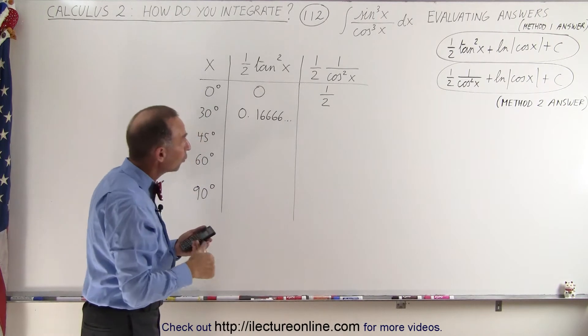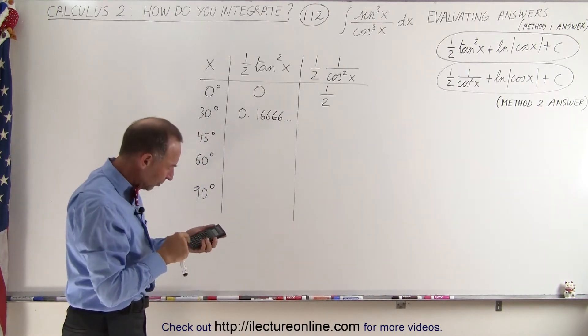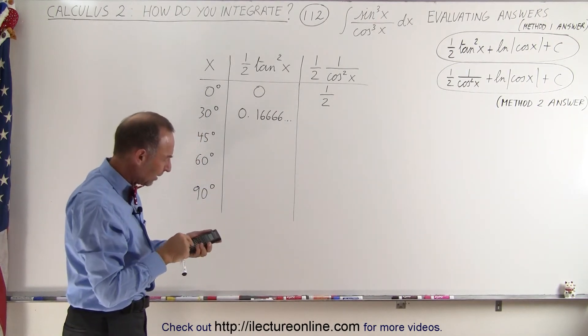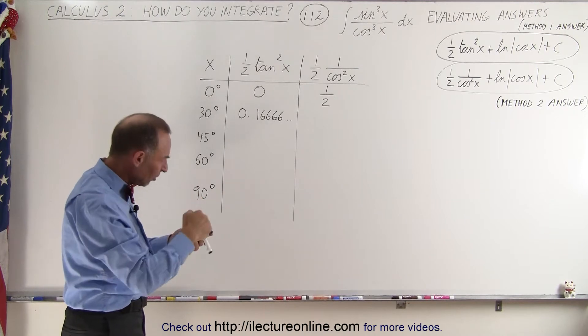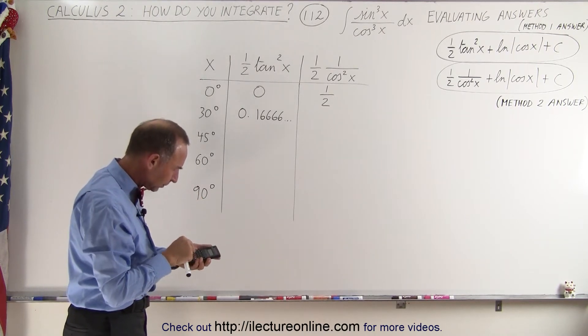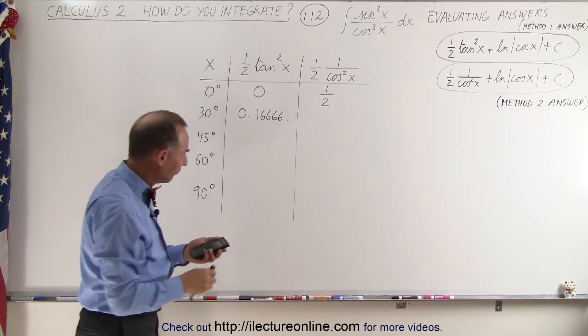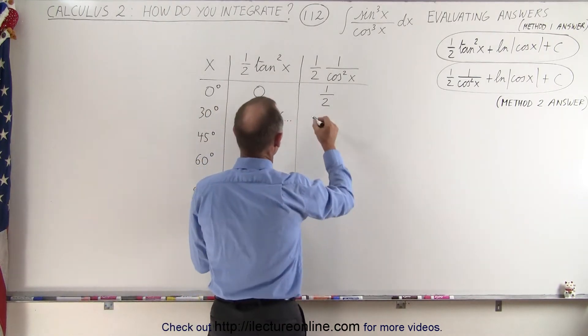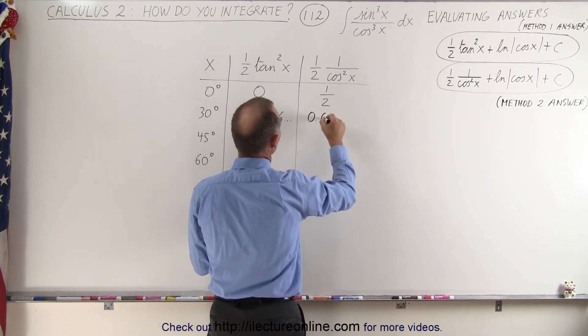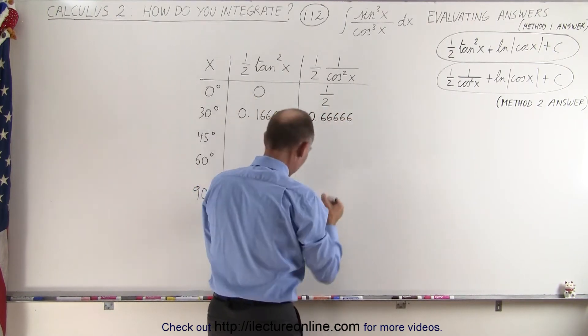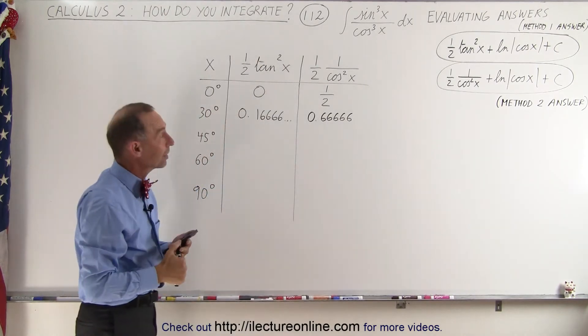We do the same for the cosine squared of x, so 30, take the cosine of that, we square that. Since it's the denominator we take the inverse of that, and then we divide by 2. And we get the following result: we get 0.6666666. Now something begins to look interesting here.